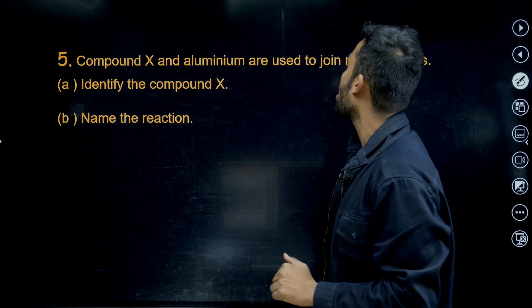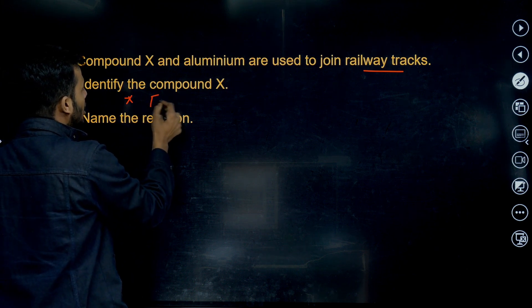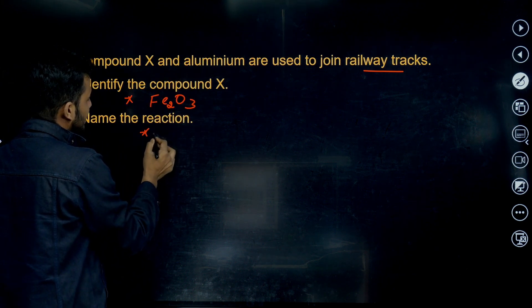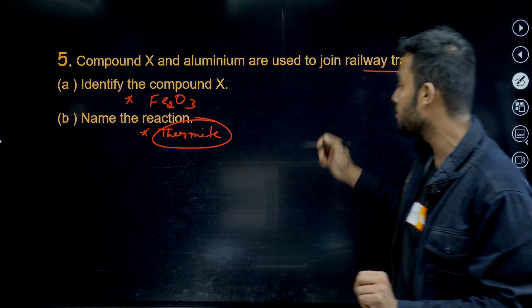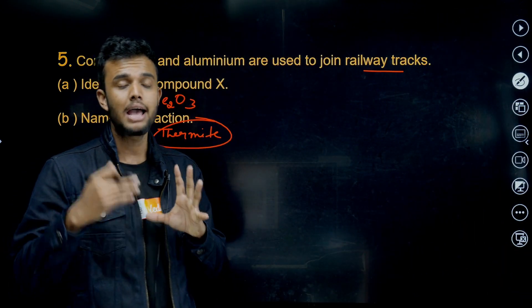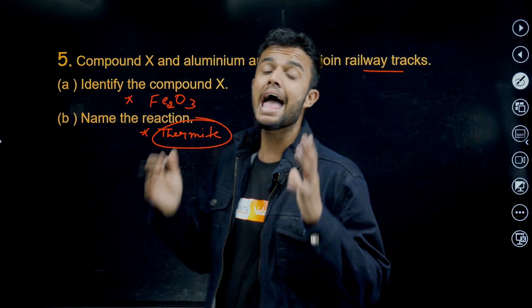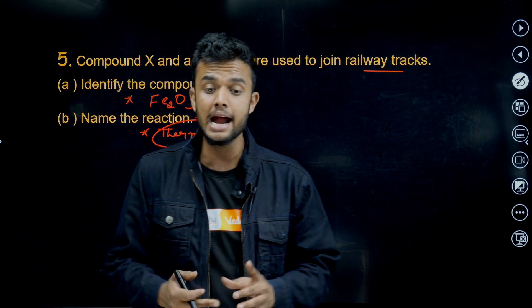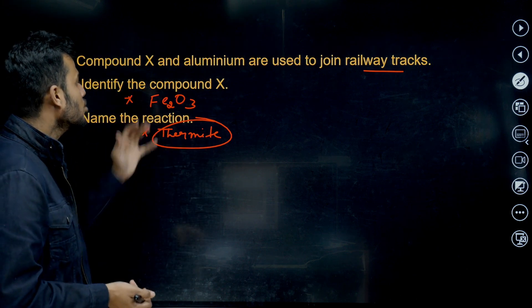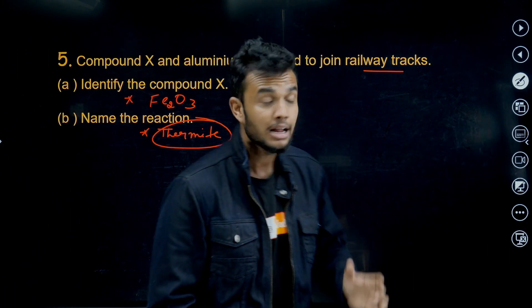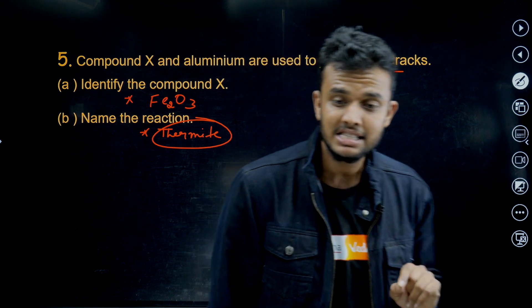Next question. Compound X and aluminum are used to join railway tracks. What is the compound? Identify the compound - iron oxide, right, Fe2O3. Iron oxide is the compound. Name the reaction - it's aluminothermite or thermite reaction. Aluminothermite reaction, right. It is also called a thermite reaction. Why? Because some compounds we cannot reduce by using coke. Instead of coke we use aluminum. And also this is a highly exothermic reaction. In this process, heat energy is liberated. Huge amount of heat energy is released. That's why we use this reaction, this method used to join the railway tracks. The metal extracted from this process is in molten state.